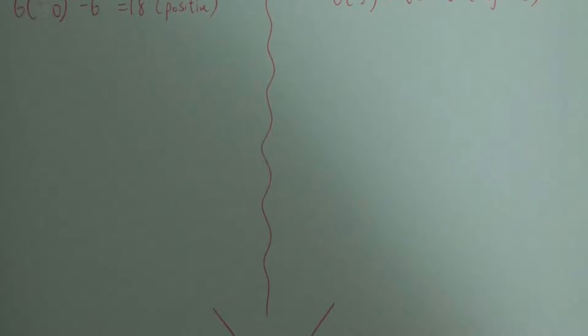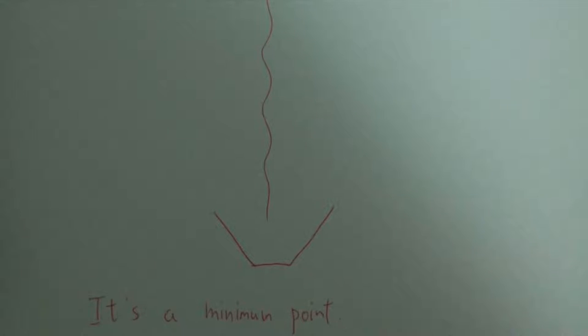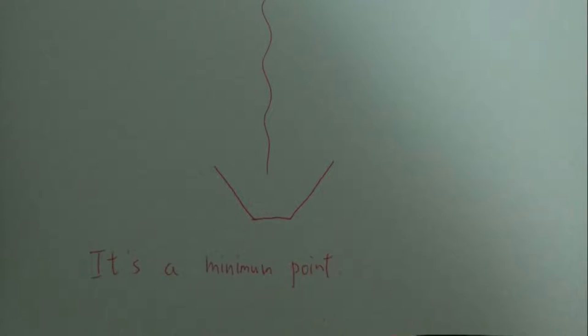We let a smaller x into the derivative. 6 times 0 squared minus 6 equals to negative 0. And sum a larger x into the derivative. 6 times 2 squared minus 6 equals to 80. Since the smaller x is negative and the larger one is positive, we can know the nature of the stationary point is a minimum point.